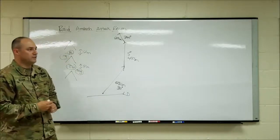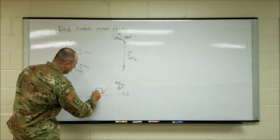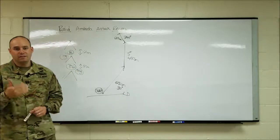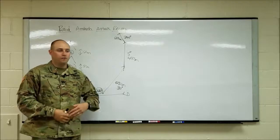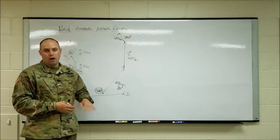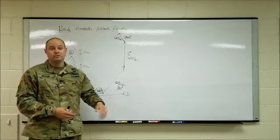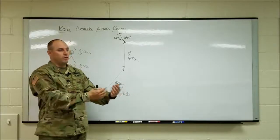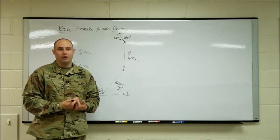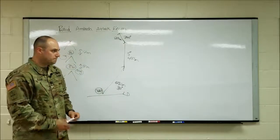Once we cross the LD, we need to identify in the vicinity of that LD what we call an initial rally point — the IRP. We need to identify something right away so that if we come into contact or become compromised, we have a standardized fallback point that higher also knows about. If we take contact early on and start running back toward friendly lines in an unorganized manner, the probability of fratricide increases significantly. So we must establish that IRP right away.